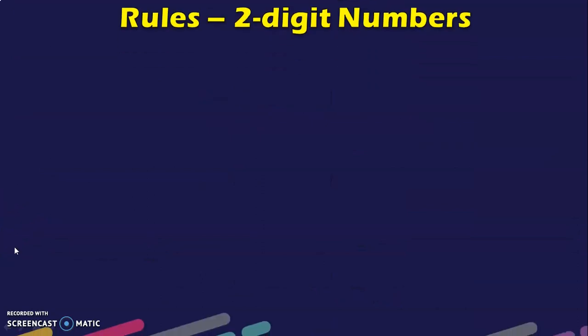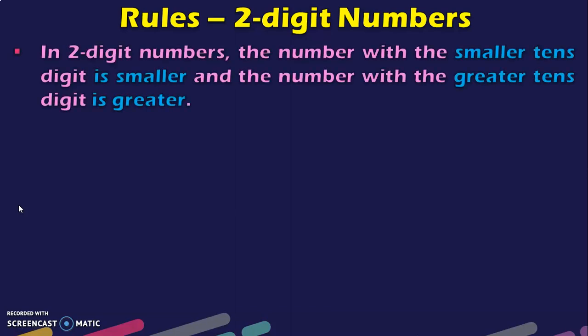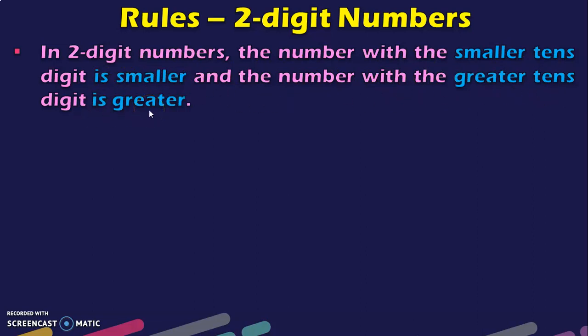Before going into comparing 3-digit numbers, I would like to give you a quick revision of what you learnt in class 1. In class 1 we dealt with 2-digit numbers and we had a set of rules to compare them. In 2-digit numbers, the number with the smaller 10s digit is smaller and the number with the greater 10s digit is greater.